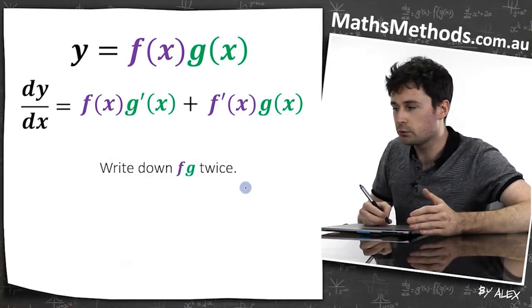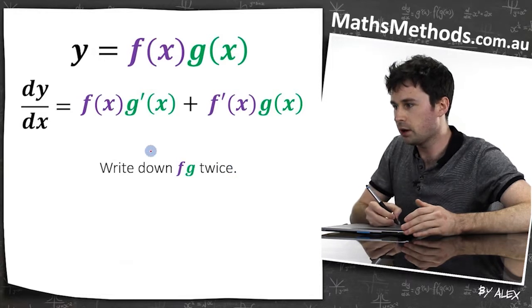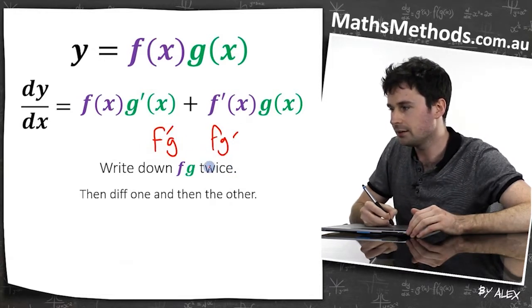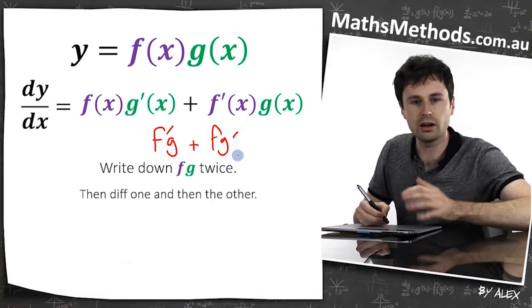That's it, done. The way I remember it is I think you write fg twice, and then you diff one, and then you diff the other, and then you add them together. So that's how I remember the rule.